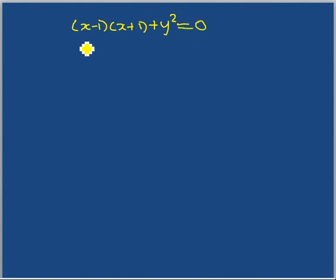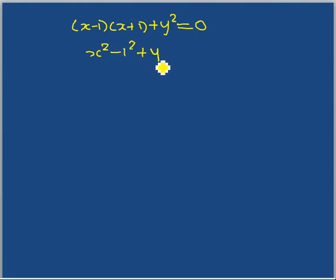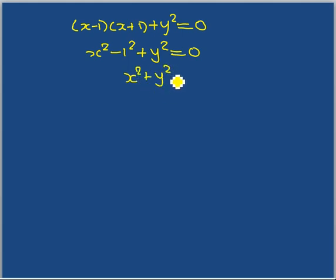Therefore, X squared plus Y squared equals 1. Hence proved.